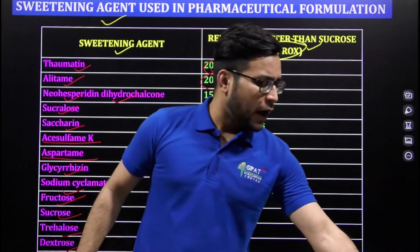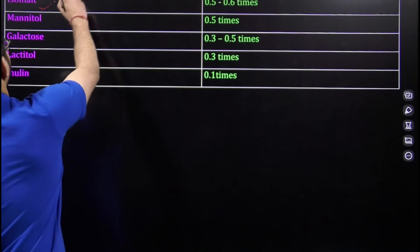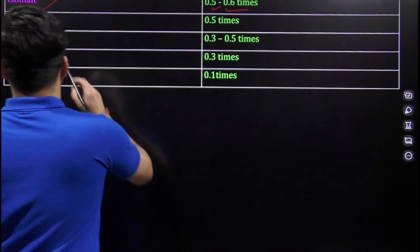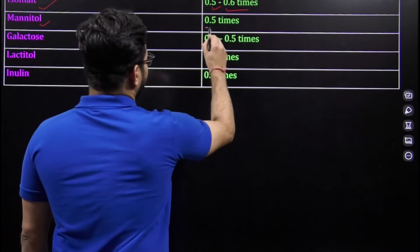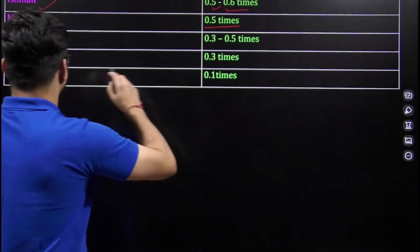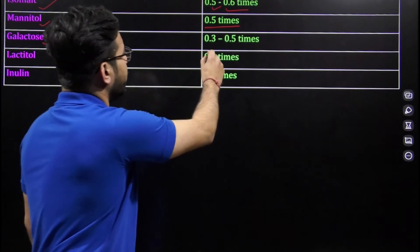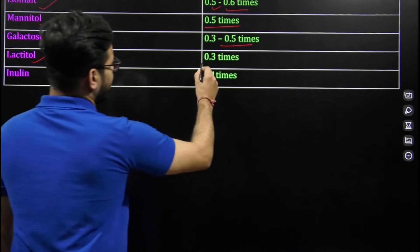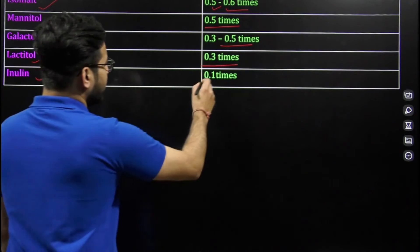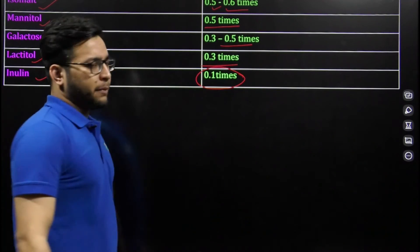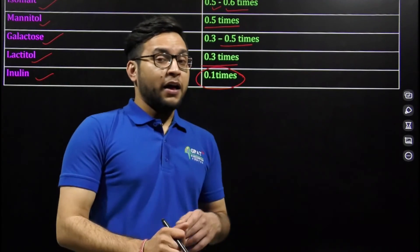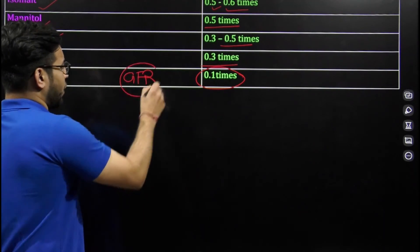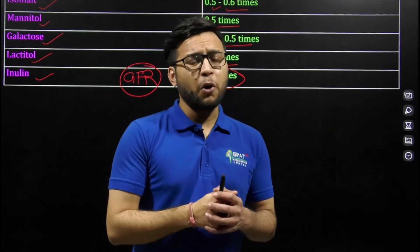Isomalt is 0.5 to 0.6 times sweeter than sucrose. Mannitol is 0.5 times sweeter, galactose is 0.3 to 0.5 times, lactitol is 0.3 times, and inulin is 0.1 times sweeter. Remember where inulin is used — it is related to GFR (glomerular filtration rate), and it plays a very important role there.